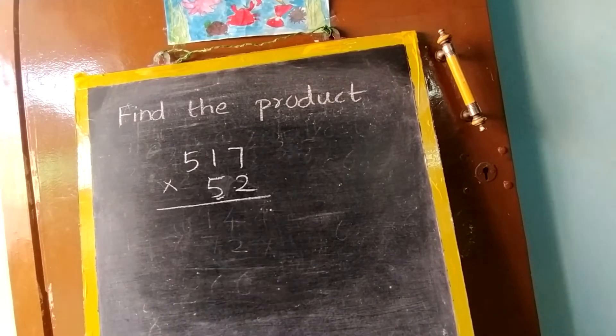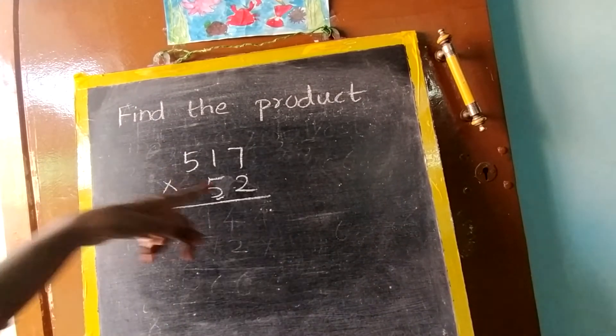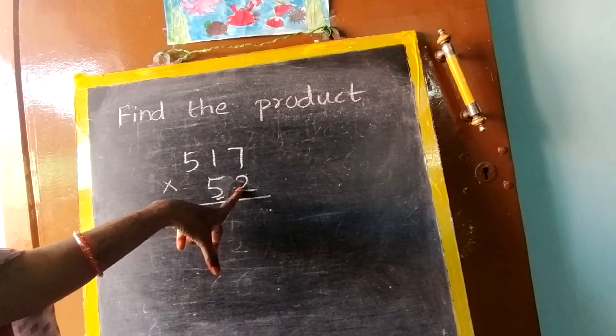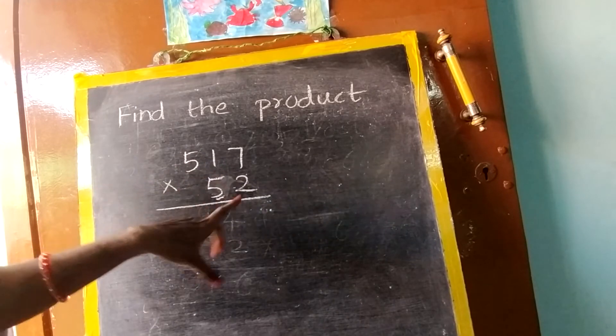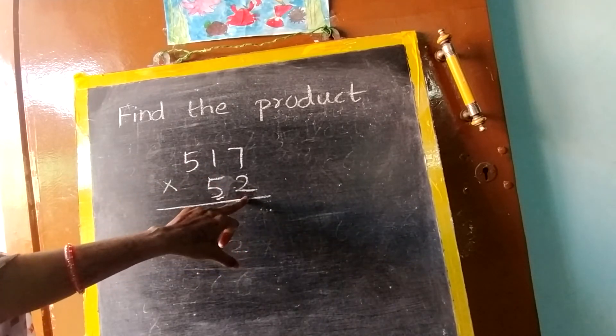One more example, I will show you. Before starting, what is the rule? The number must be multiplied by all the 3 numbers. First this number, then this number, then this number. So first you have to see only 1's place with 2.